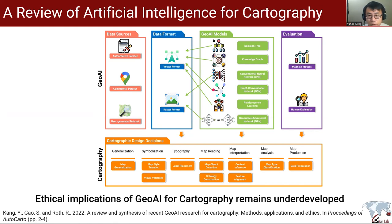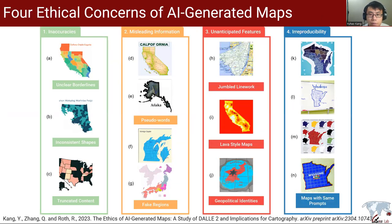Cartographers have always been concerned about the ethical issues that arise from maps, such as inaccuracies due to data uncertainty and bias influenced by power. Similarly, DALL-E 2 generated maps may also raise ethical concerns. I summarize four ethical concerns.